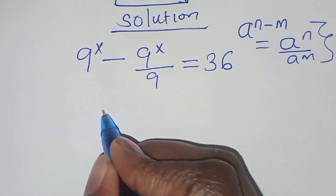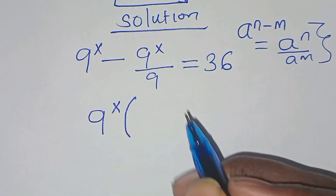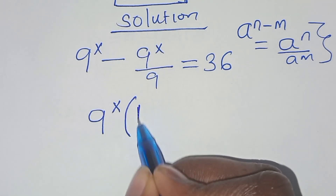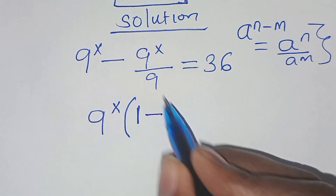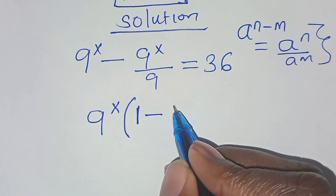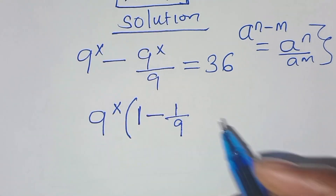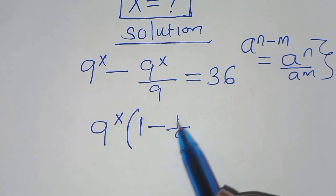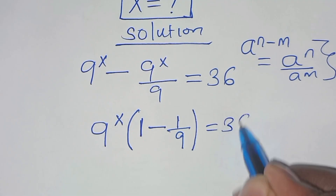Since 9 to the power x is common here, so we factor out 9 to the power x. So this is the same thing as 1 minus 1 over 9. We factor out 9 to the power x, and we have 1 minus 1 over 9. This is equal to 36.